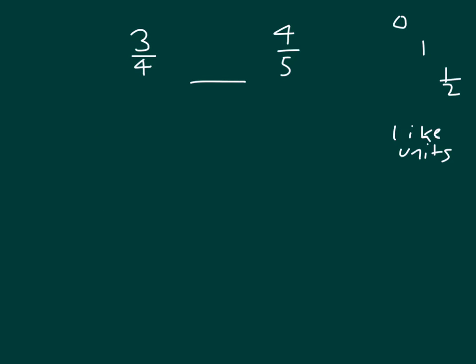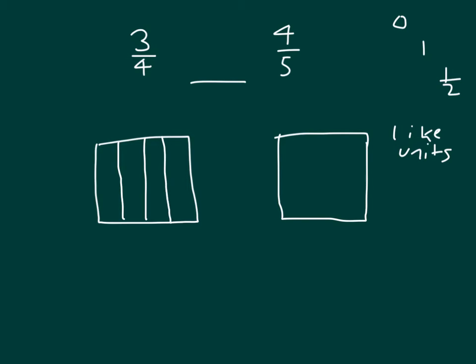Let's try drawing area models for each of these. Here's 3 fourths—1, 2, 3 lines to divide it into 4 parts, and it's shaded. For 4 fifths, I have 4 lines to divide it into 5 parts, and I was looking at 4 of those. So here in our area model we have 3 fourths, and here we have 4 fifths.